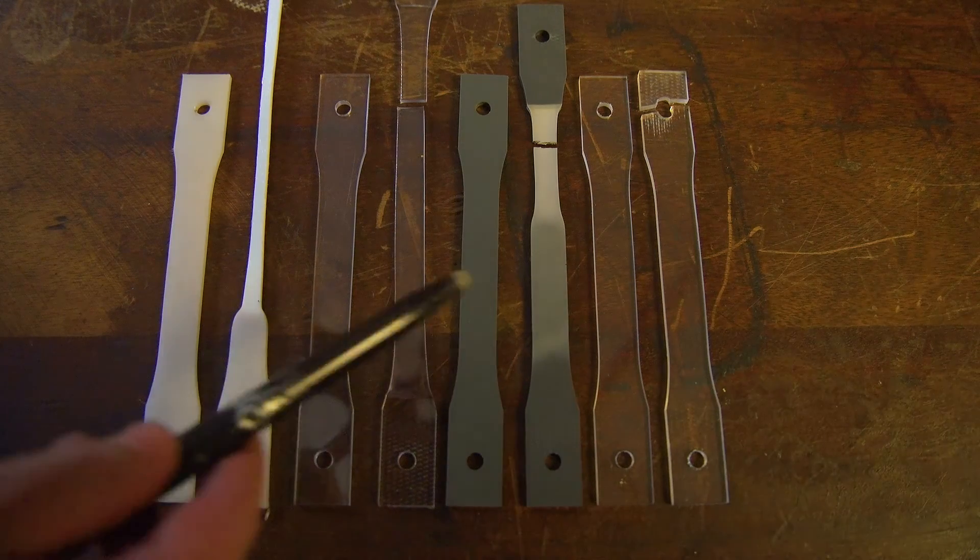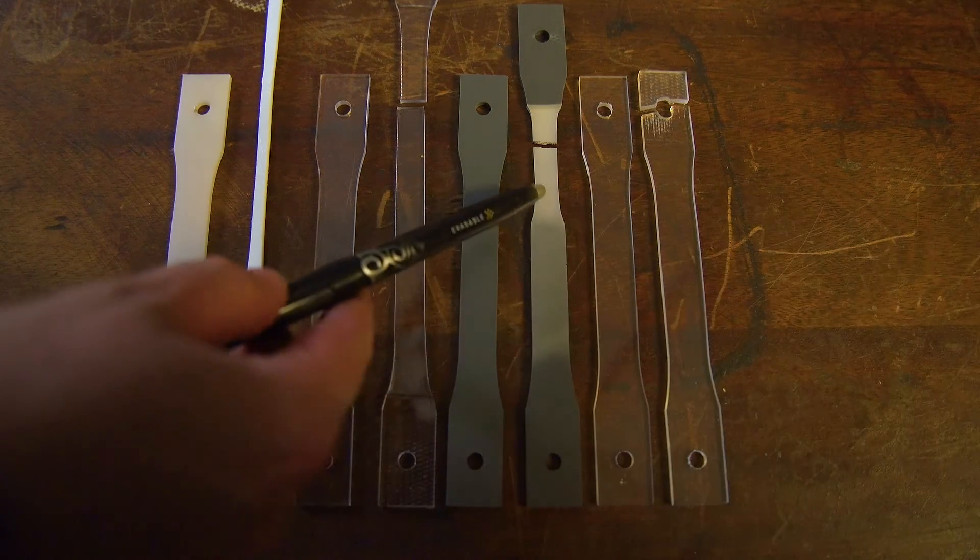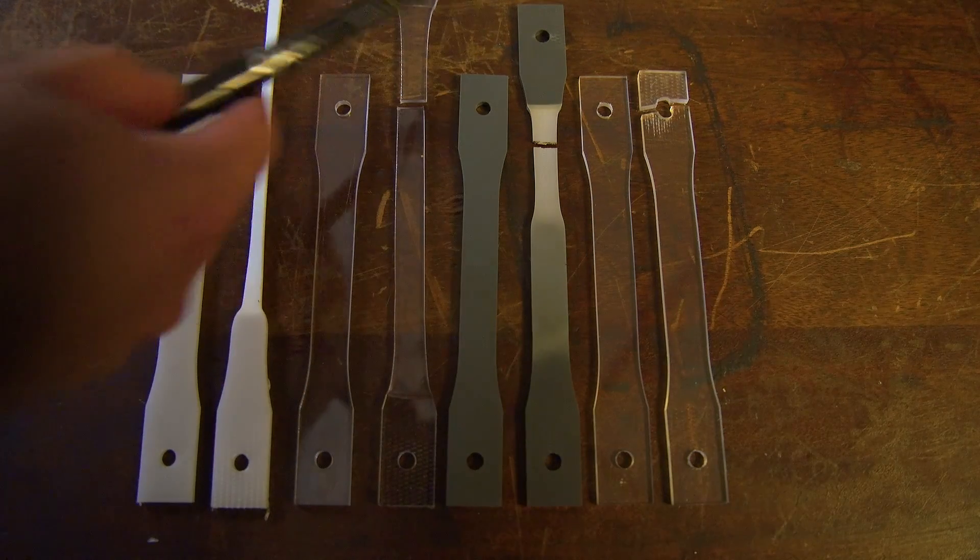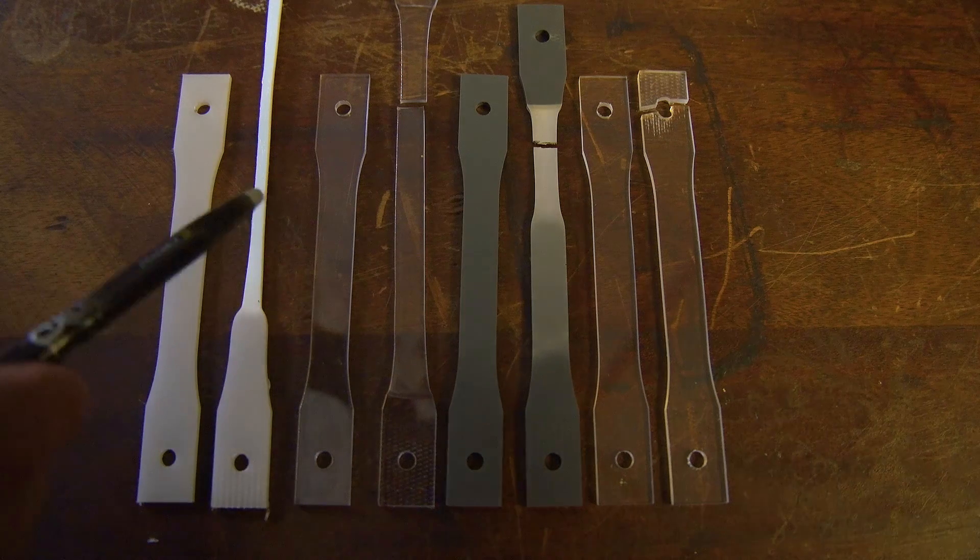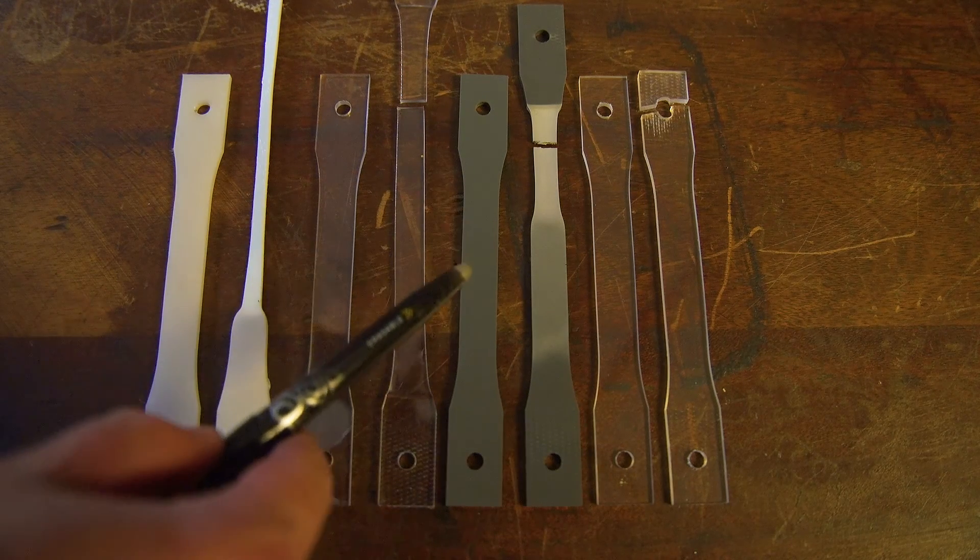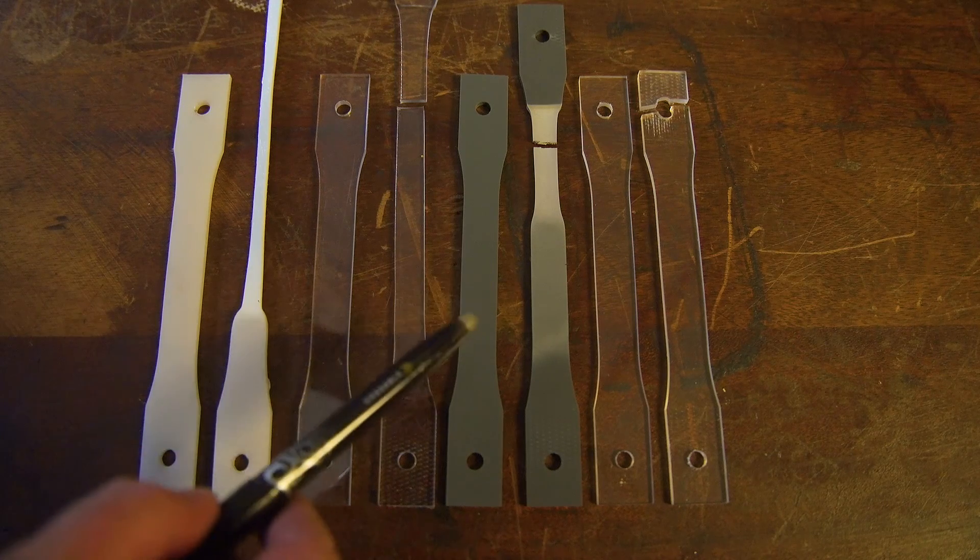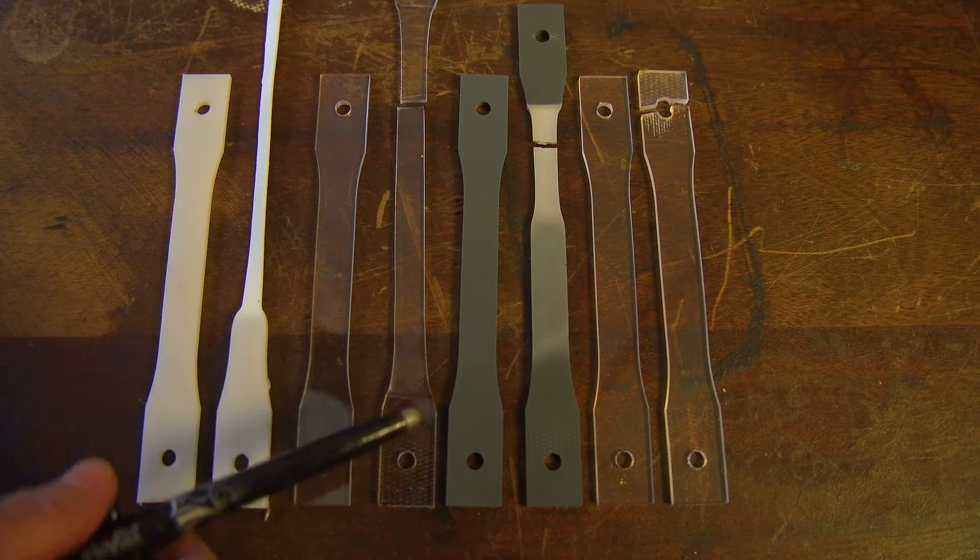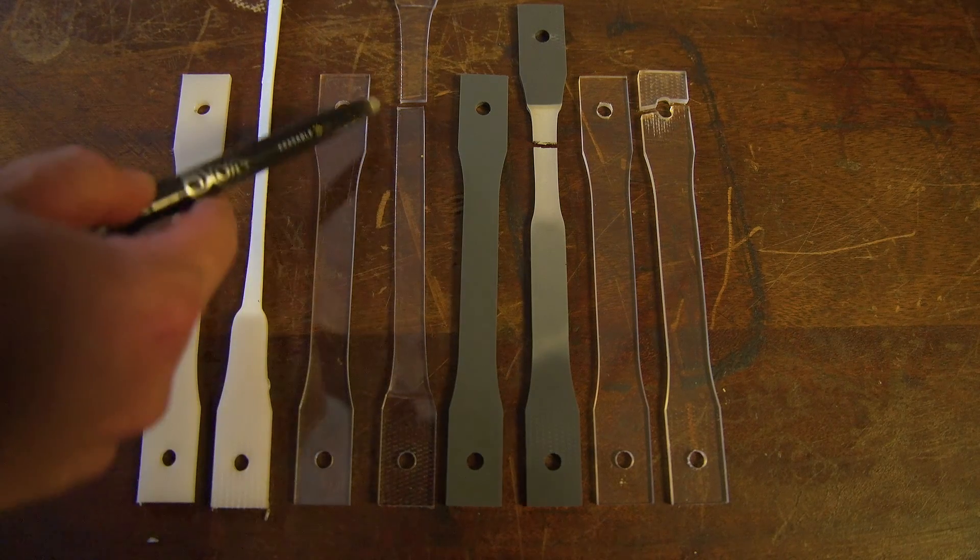Our PVC sample exhibited stress whitening and crazing, and it did exhibit a bit of plastic deformation. Similarly, the polycarbonate sample also exhibited a bit more plastic deformation than the PVC sample, and it also had a bit of crystallization, which resulted in a change in opacity.